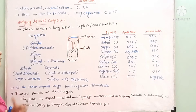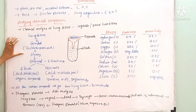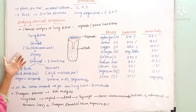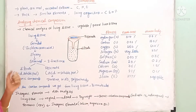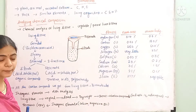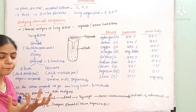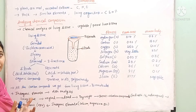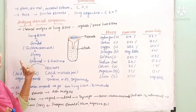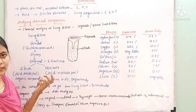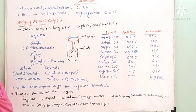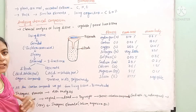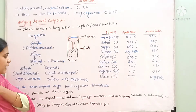Trichloroacetic acid causes cell lysis — a breakdown of cells.